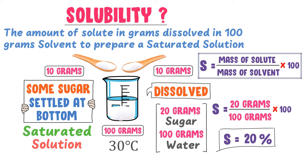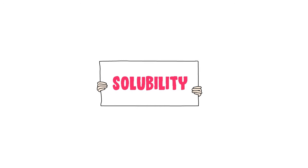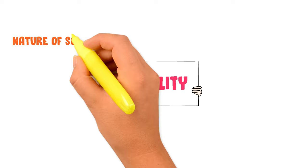The solubility of sugar is 20 percent in 100 grams of water at 30 degrees centigrade. If we increase the temperature of water, the solubility of sugar will increase. Remember that solubility means how many grams of solute is dissolved in 100 grams of solvent at a particular temperature. Solubility depends upon three factors: nature of solute and solvent, pressure, and temperature.